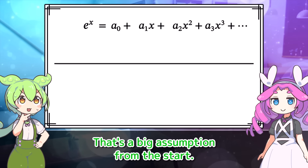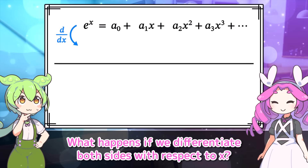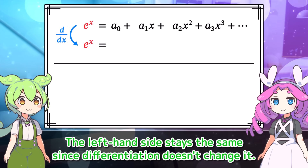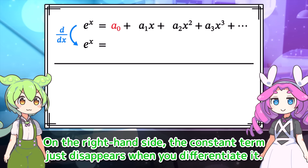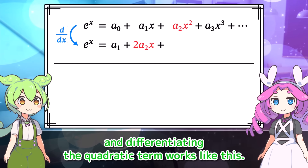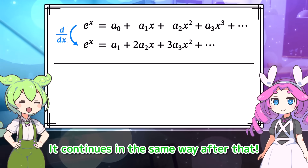First, we assume that the exponential function E to the X can be expressed as an infinite sum — a so-called power series. That's a big assumption from the start. What happens if we differentiate both sides with respect to X? The left-hand side stays the same since differentiation doesn't change it. On the right-hand side, the constant term just disappears when you differentiate it. Next, differentiating the linear term gives a constant, and differentiating the quadratic term works like this. It continues in the same way after that.